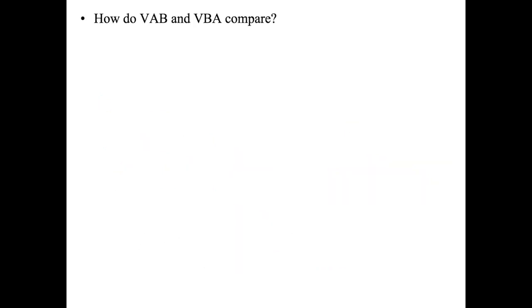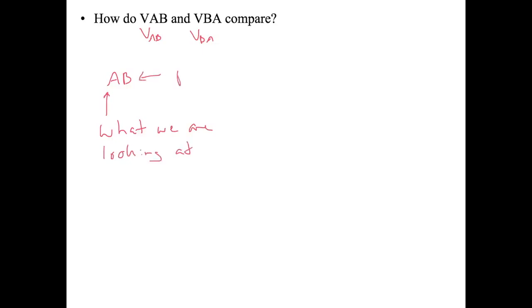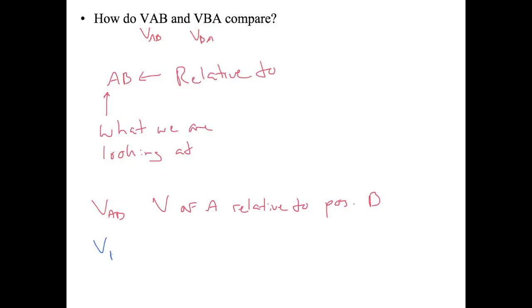How do v_ab and v_ba compare? With relative motion notation, the first subscript letter represents what we are looking at — the speed of that object — and the second letter is always relative to. So v_ab means the velocity of A relative to B, and v_ba means the velocity of B relative to A.